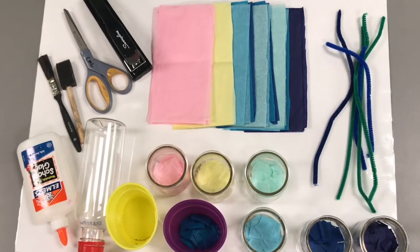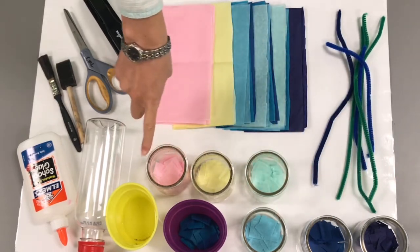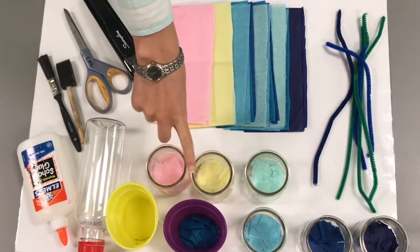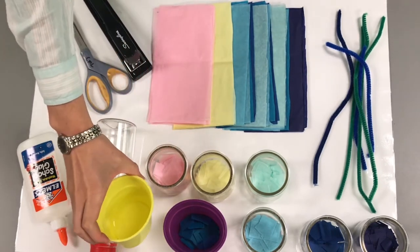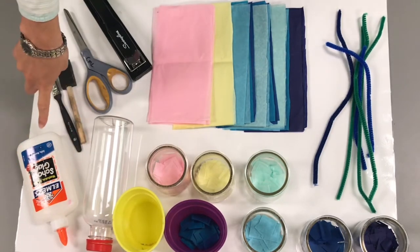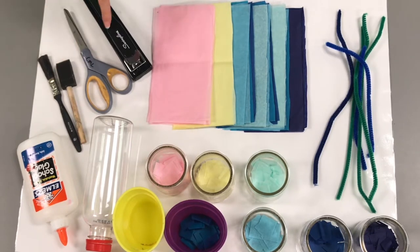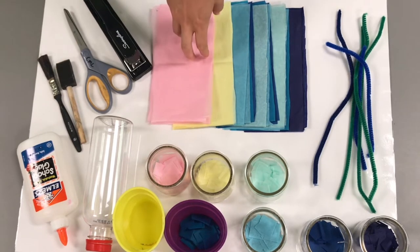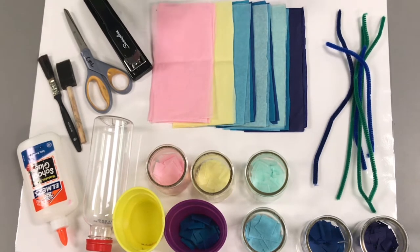For this project you're going to need some pipe cleaners, tissue paper of different colors cut. These are cut roughly into squares. You can cut them into rectangles or strips. A container with some water, plastic water bottle, some glue, a paintbrush, whatever kind you'd like, a pair of scissors, a stapler, and tissue paper cut into four by eight rectangles. And you'll need five pieces of tissue paper for each flower.